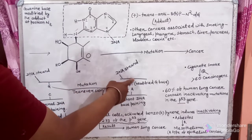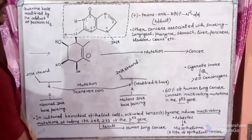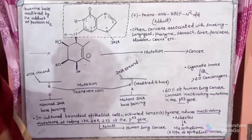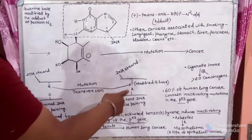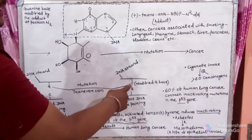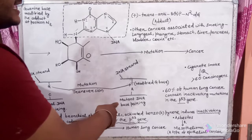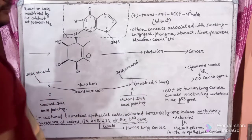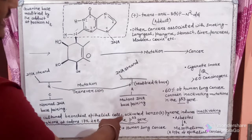This thymine or T is the modified G base. Due to the presence of thymine, the DNA polymerase during DNA replication inserts an adenine to base pair with the T. As a result, the DNA acts like a mutant DNA.